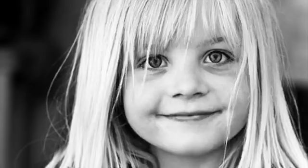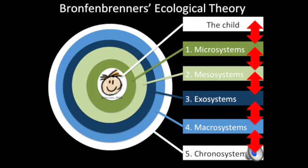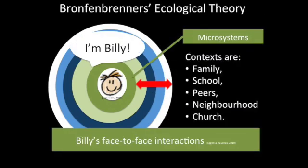Why do children develop so differently? What sets them apart? Bronfenbrenner professed children are influenced by five different contexts in which they live, the interactions within these contexts and the changes over time.